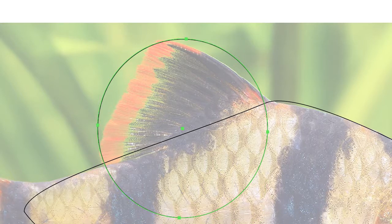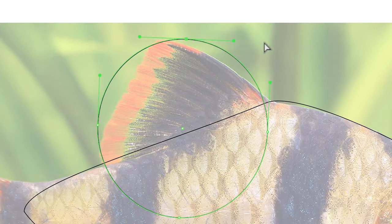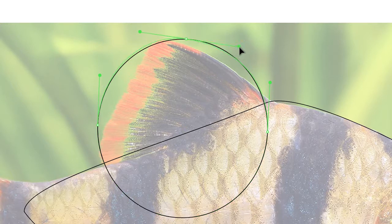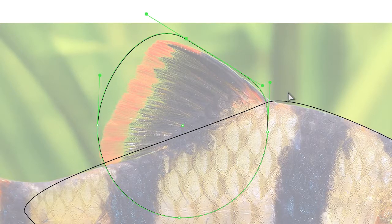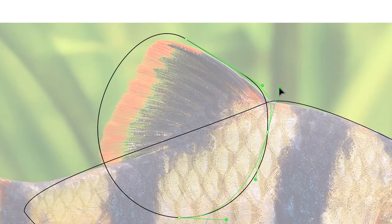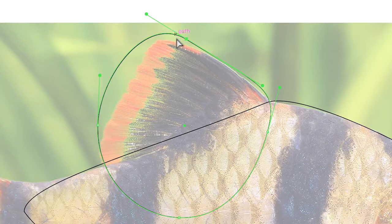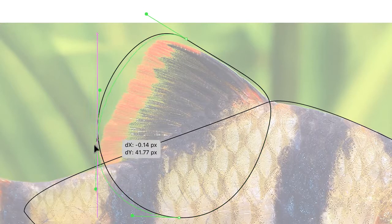So hit the white arrow, the Direct Select tool, and let's see what we can do here. I got the top anchor point selected. I want to see if I can get a curve to follow that. And remember, our interpretation of this is stylized and geometric. So does it have to be perfect? Absolutely not. I think the best thing to do is, with the white arrow, grab this anchor point and just drag it down here.